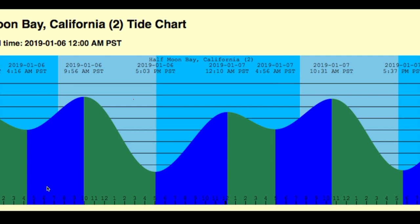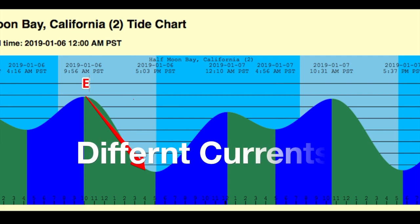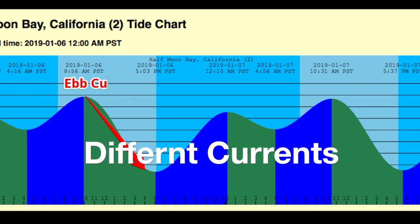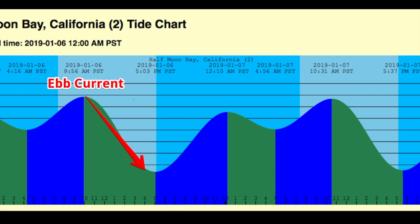The low tide there is approximately 5:03. High tide there, about 9:56 a.m. — pretty much 10 o'clock. So right here, this is called the ebb current — it's going from high tide to low tide. And then right here, this is called the flood current — that's from low tide to high tide.